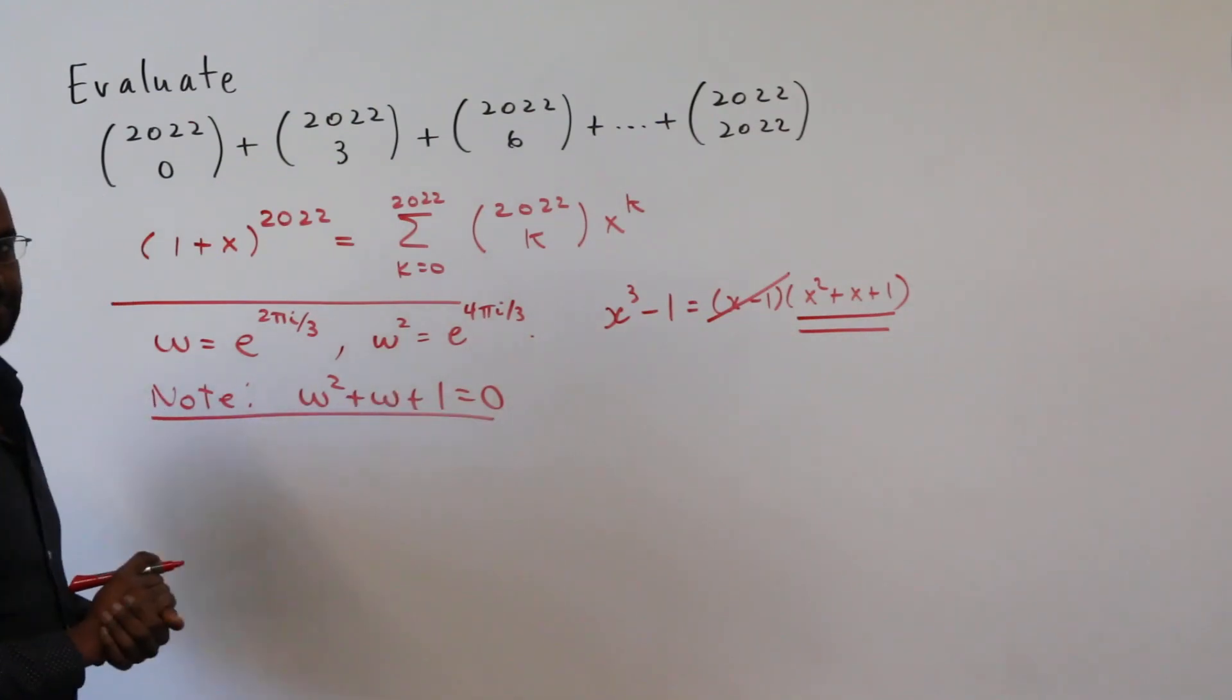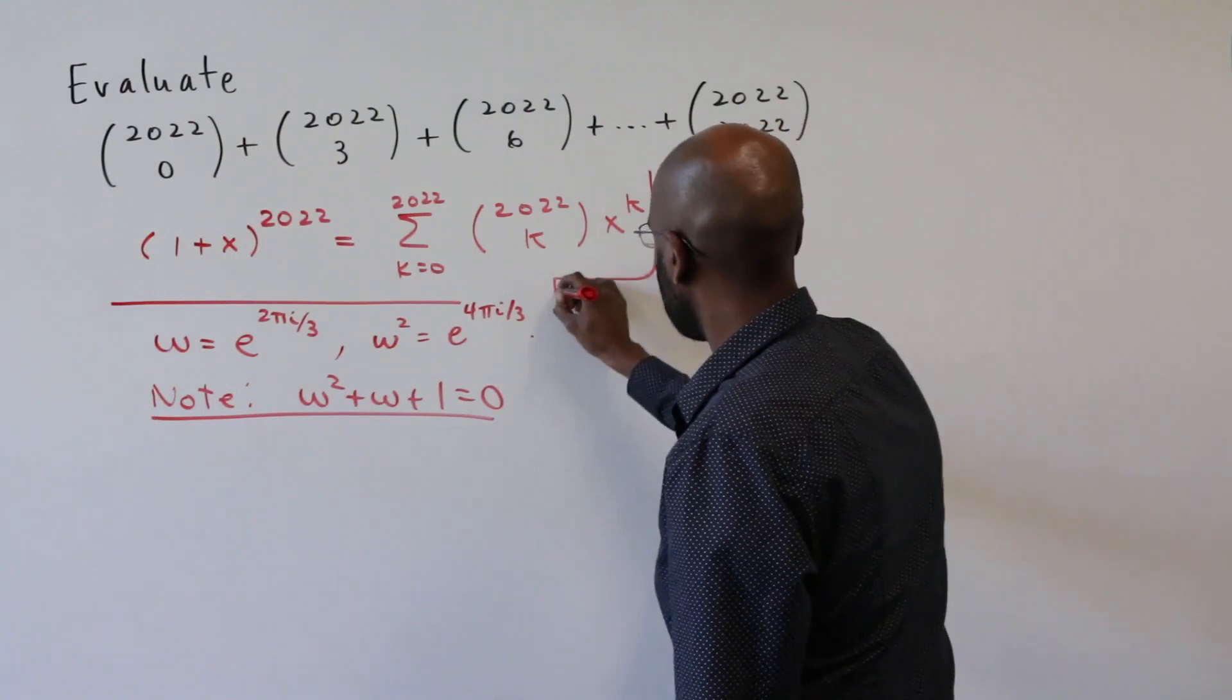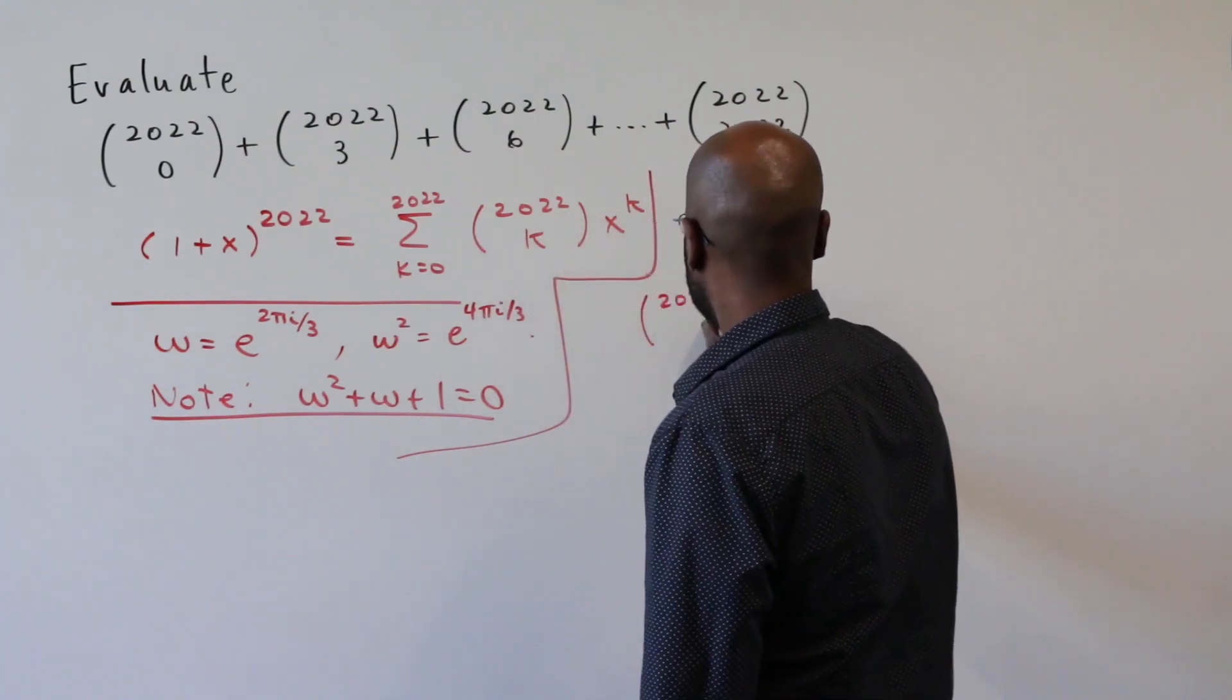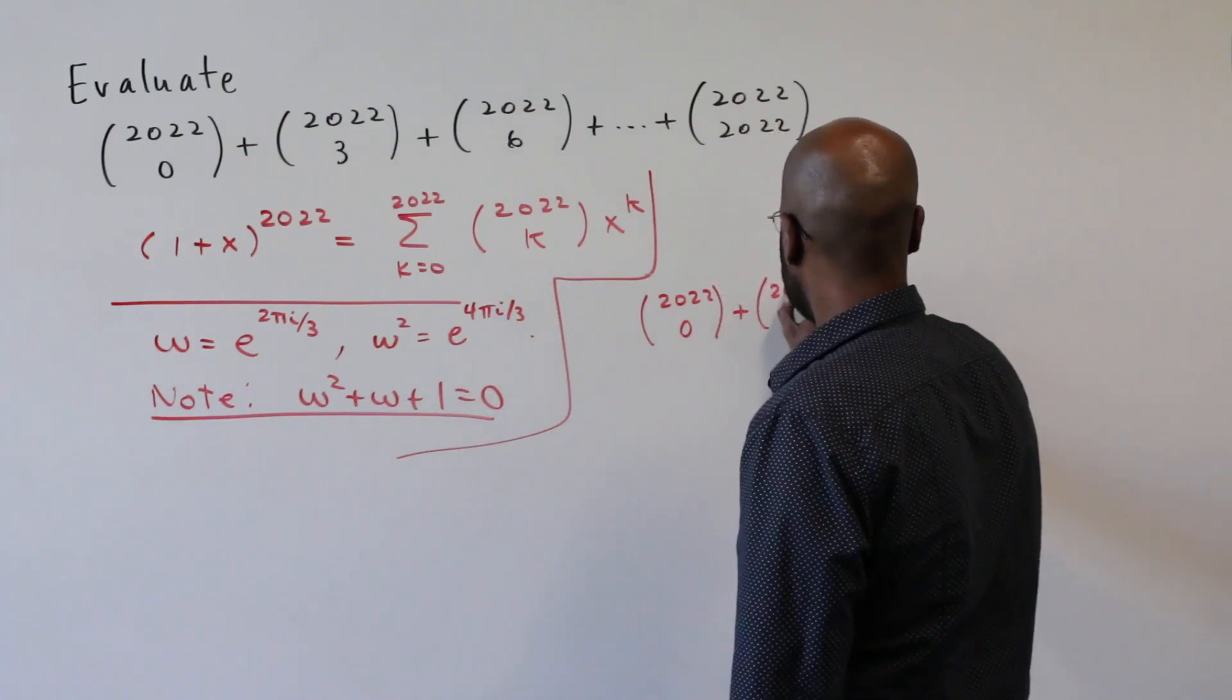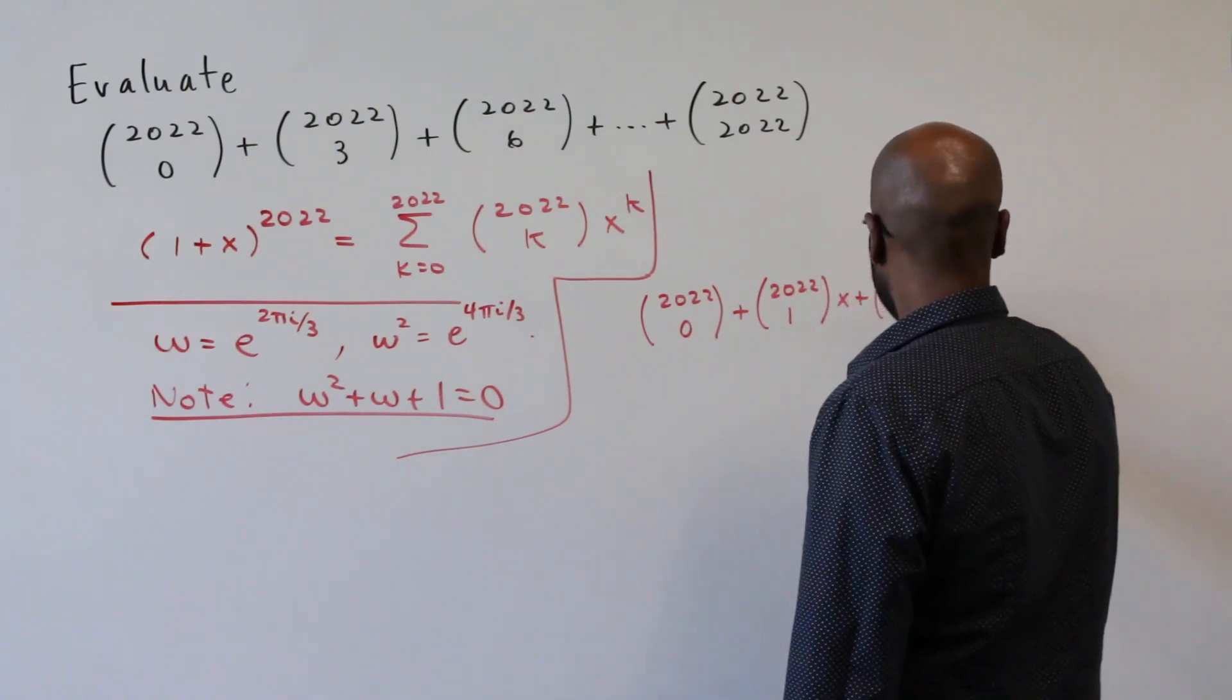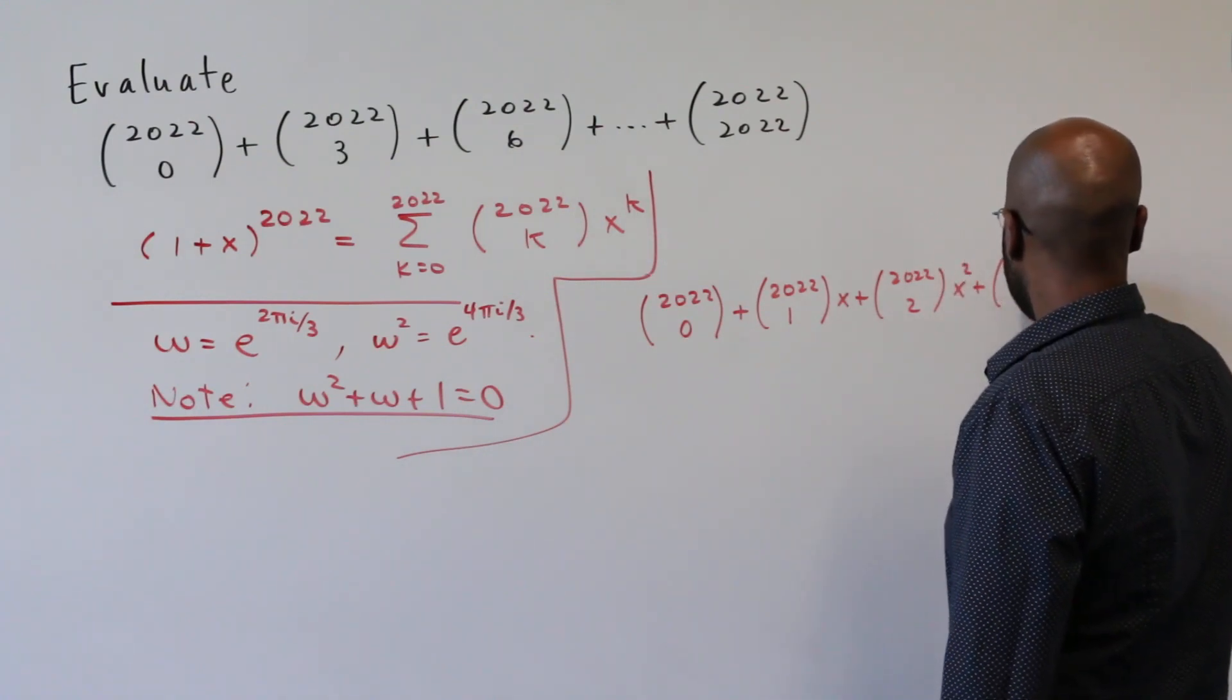That'll come in handy. Okay, so I'd like to play with this binomial expression using these omegas to figure something out about what we're trying to solve. And I'm going to write down this expression explicitly. So we have 2022 choose zero plus 2022 choose one x plus 2022 choose two x squared plus 2022 choose three x cubed, etc.